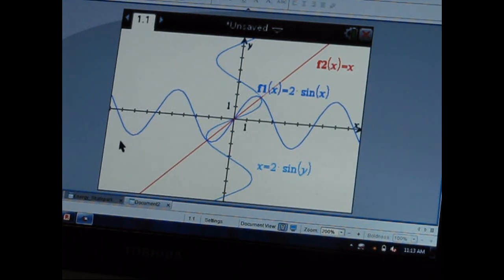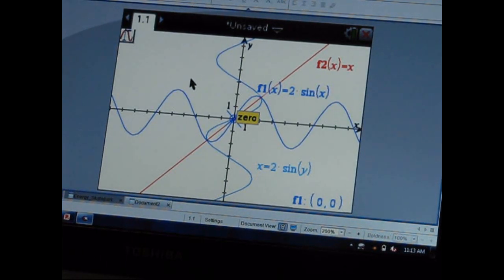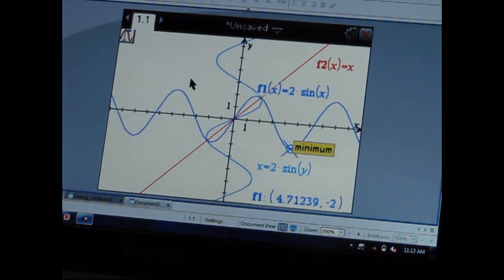Now one of the nice things about this feature also is the ability when we go into the trace feature, we can trace along one of the graphs and then if we hit the up and down arrow, we move between graphs. So we'll move from 2 times sine of x to 2 times sine of y. And you can see that the point that we're tracing on is our inverses of each other, where the x is equal to the y of the other.